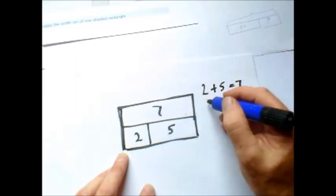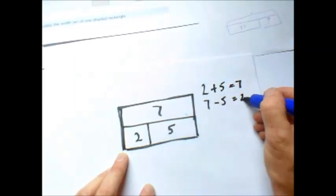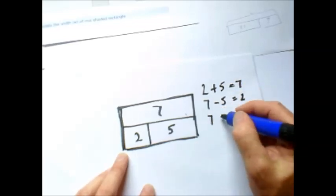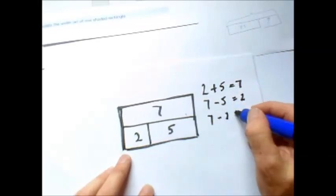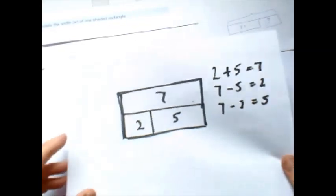Also, 7 we've got there, take away 5 equals 2. Then we've got 7 take away 2 equals 5. So that's the principle behind bar modelling on a very simple scale.